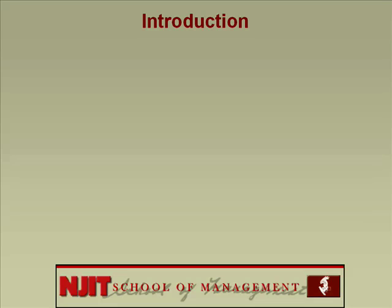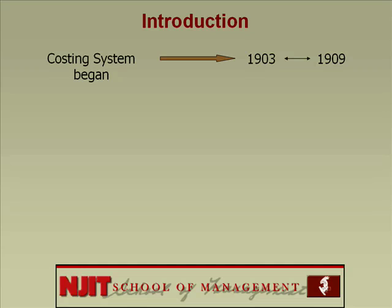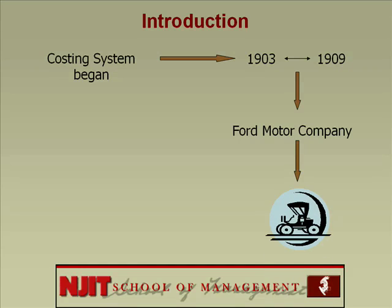The concept of costing systems began around the period 1903 to around 1909. At guess where? You know the company — it's very famous. Ford Motor Company. Around this time, Ford made the small black identical cars. Guess the name — the T-Model.